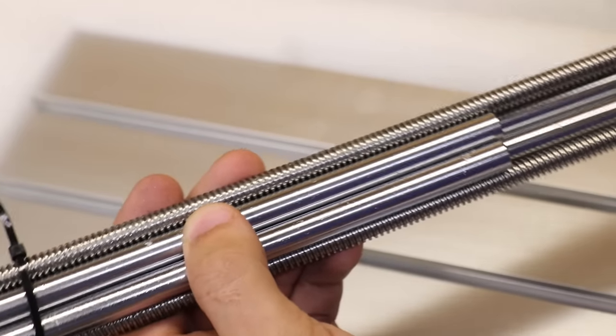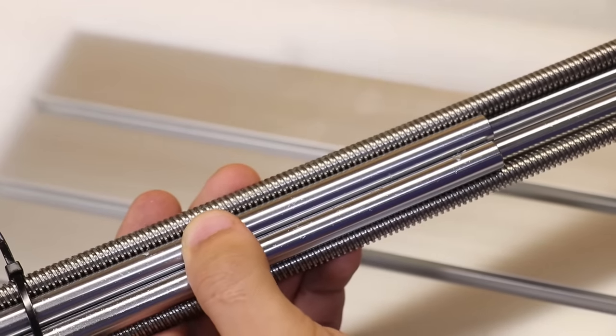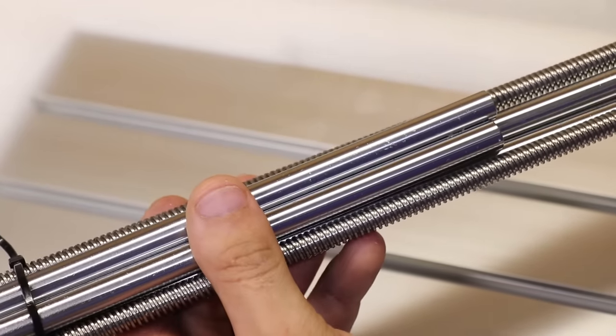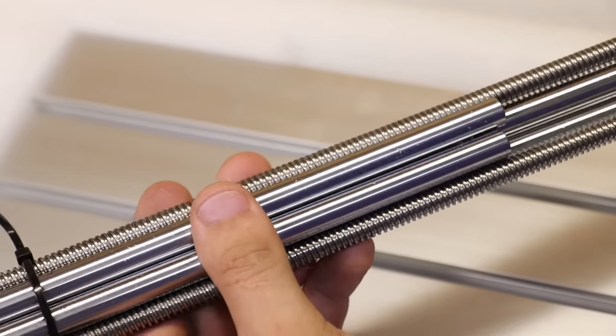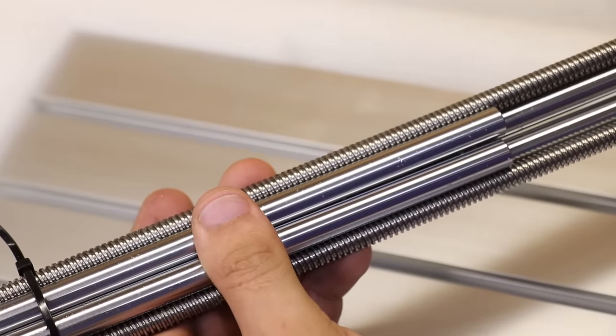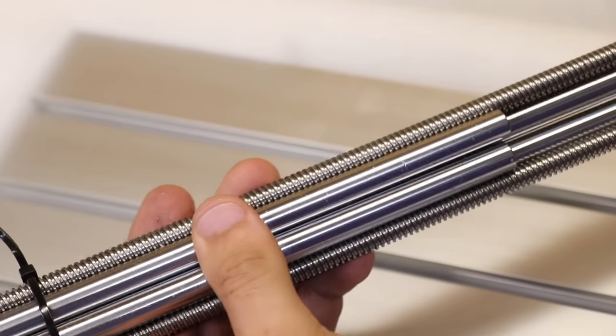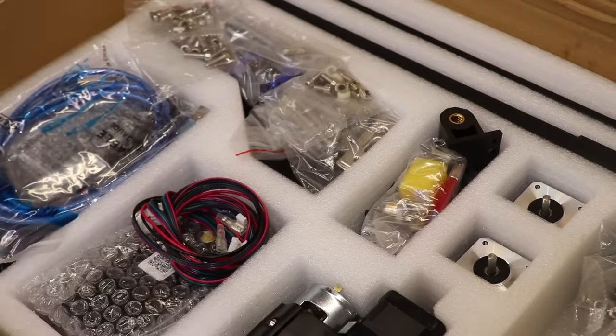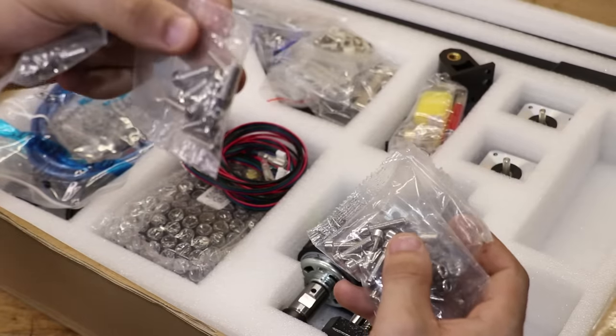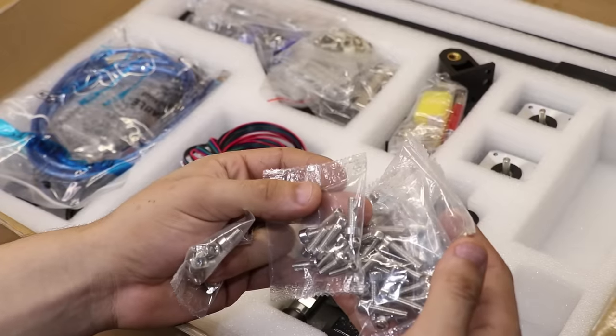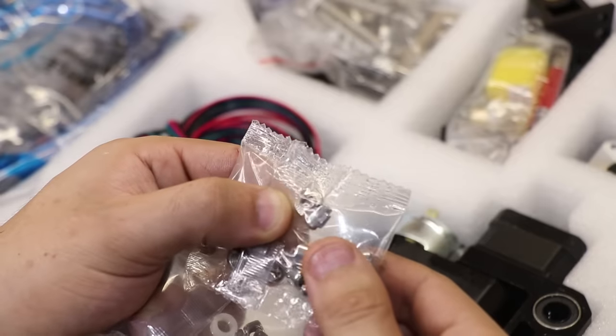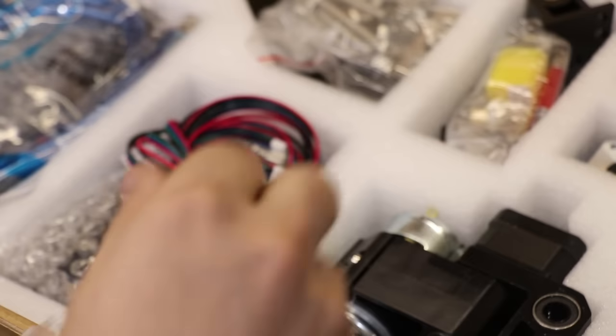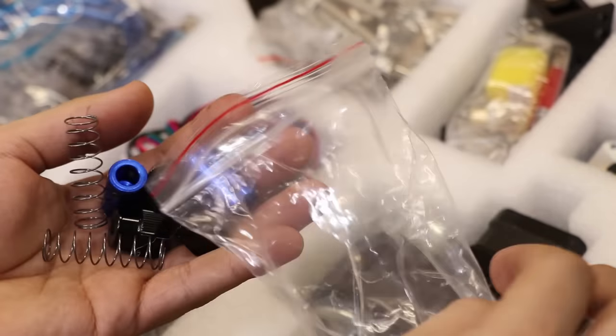We also have what looks to be our linear rods and our trapezoidal thread lead screws. I'm guessing there's going to be some sort of anti-backlash mechanism somewhere in the kit. They packed in a lot of screws, so hopefully we don't have any leftover.